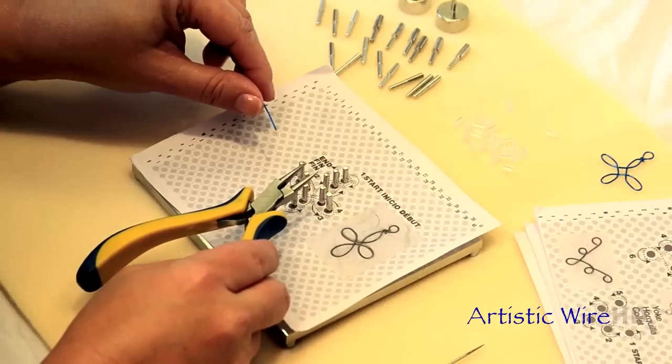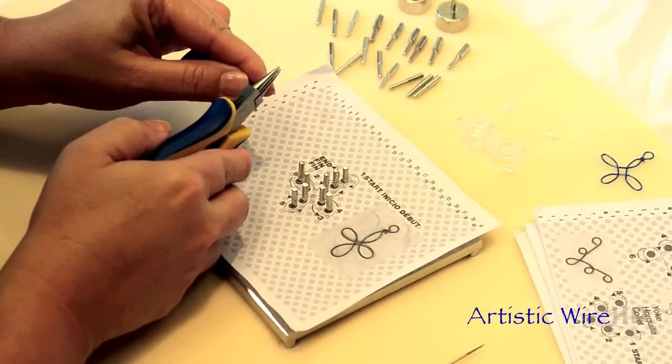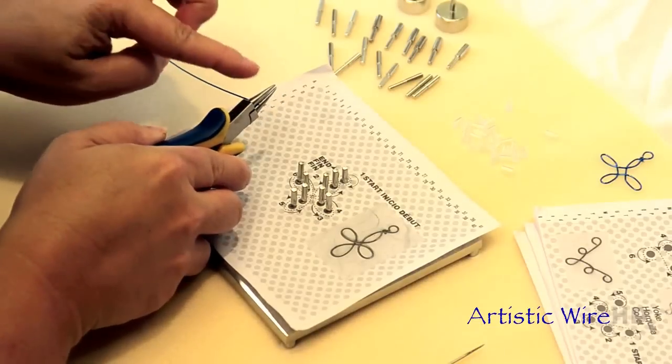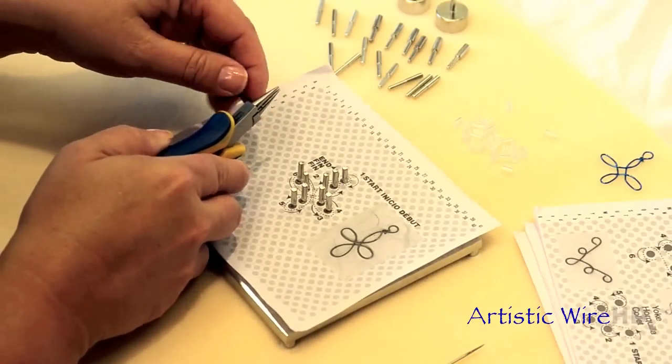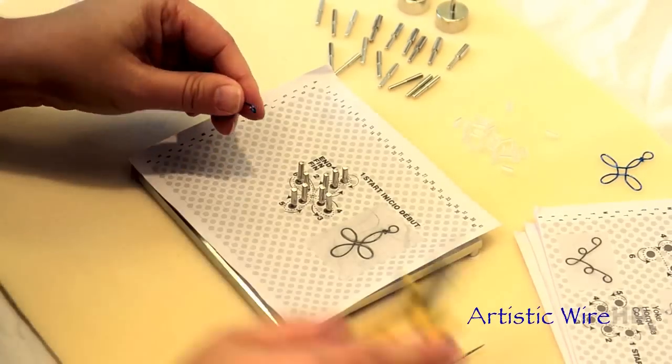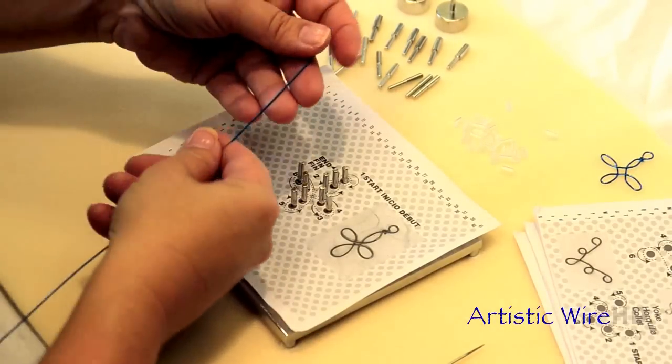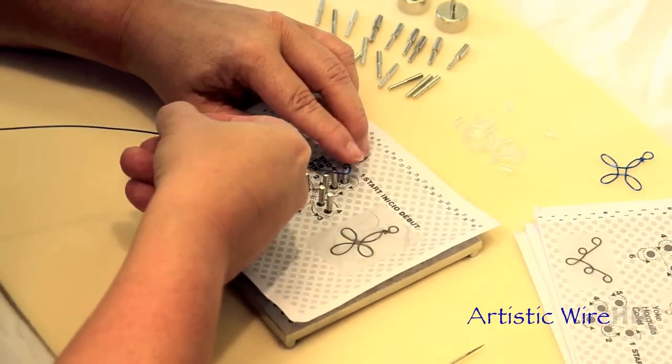Most of the time you are going to be making a loop to start your pattern. Now I'm working down the nose of the pliers so that I have a large loop that will go around that metal peg. And then I'm just going to place that where it says start and then just follow that pattern.